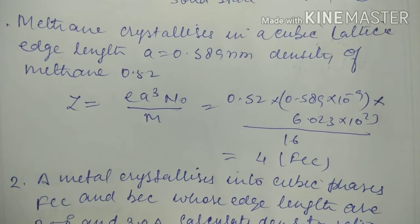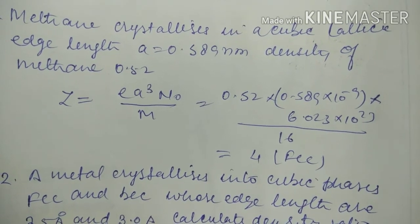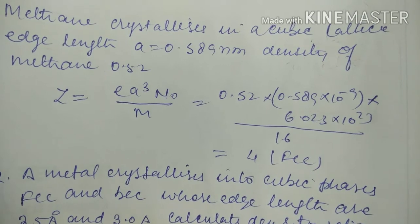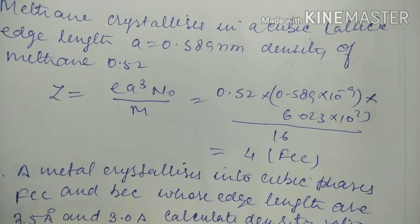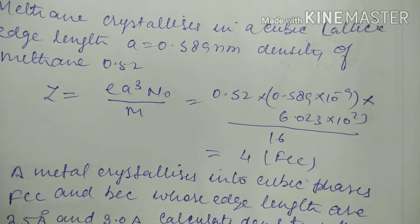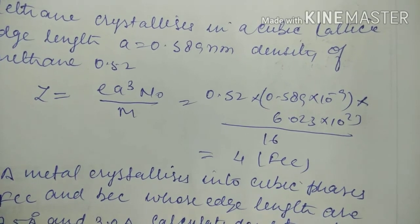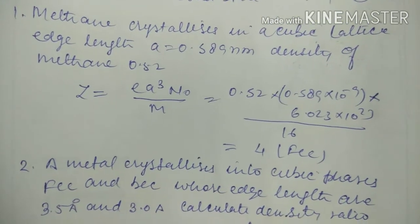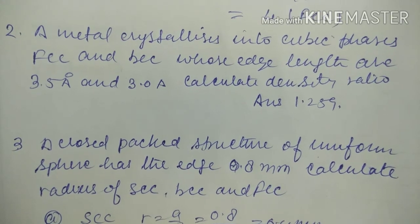Now after that, we're coming to the numerical of density. Methane crystallizes in a cubic lattice with edge length 0.589 nanometers and density of methane is 0.52. Find out the rank Z. We know that Z equals rho times a cubed times N_A divided by M. Rho value is 0.52, a value is 0.589 times 10 to the power minus 9, cubed. Avogadro's number is 6.023 times 10 to the power 23, and M equals 16. So the value is coming as 4, meaning this is an FCC cubic unit cell. After that, we're coming to the next question.